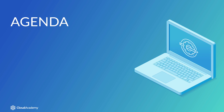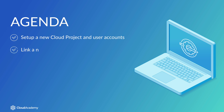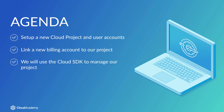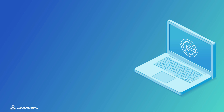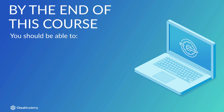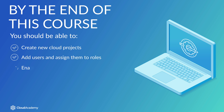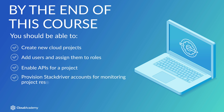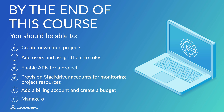In this course, we will start by setting up a new cloud project and user accounts. Next, we will create a new billing account and link it to our new project. Then, we will leverage the Cloud SDK to manage our new project. By the end of this course, you should be able to create new cloud projects, add users and assign them to roles, enable APIs for a project, provision Stackdriver accounts for monitoring project resources, add a billing account and create a budget, then manage organization resources using the Cloud SDK.